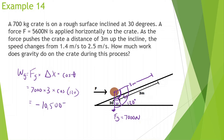The result should be negative because as the crate goes up, gravity is making it lose energy. Without gravity, it would go up the ramp easier and faster. So the work done by gravity is negative 10,500 joules.